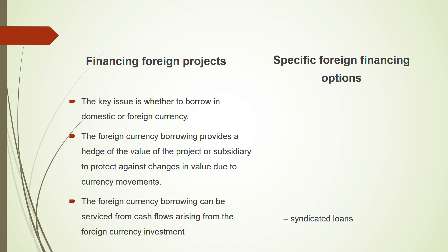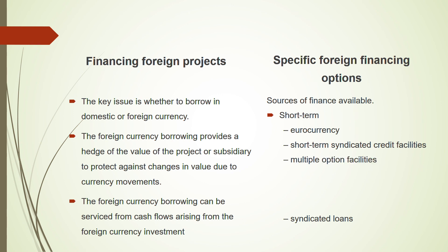Foreign currency borrowing can be serviced from cash flows arising from the foreign currency investment — you can use the foreign currency cash flows you receive to repay the foreign currency loan directly, with no need to convert and no currency risk. For specific foreign financing options — short-term: eurocurrency, short-term syndicated credit facilities, multiple option facilities, and euro notes. Long-term: eurobonds and syndicated loans. Make sure you read about these in your textbook; you will not be asked a detailed question on them.